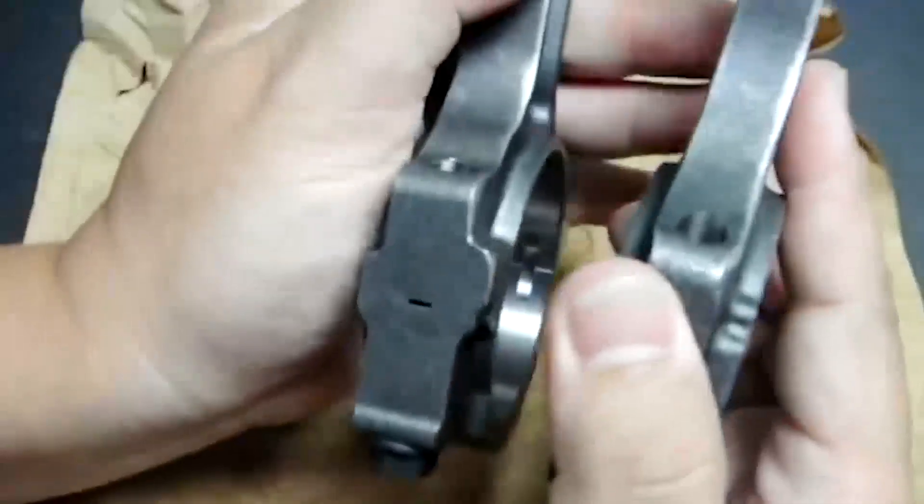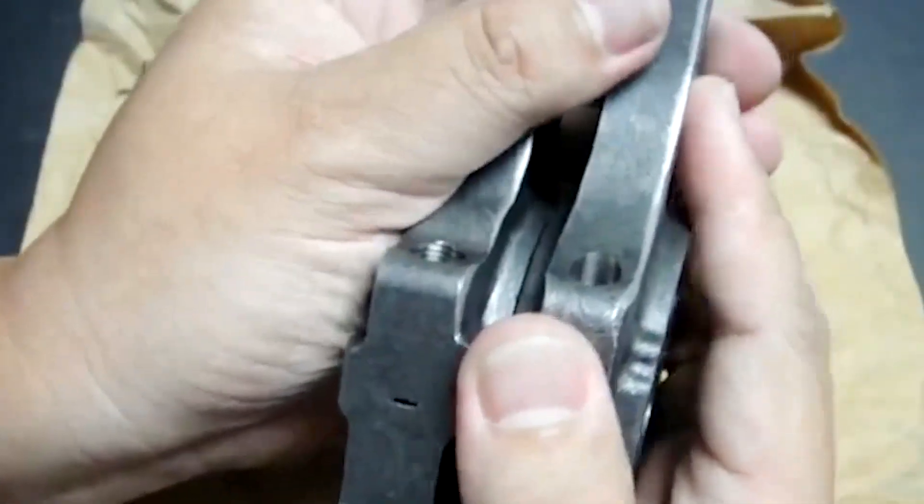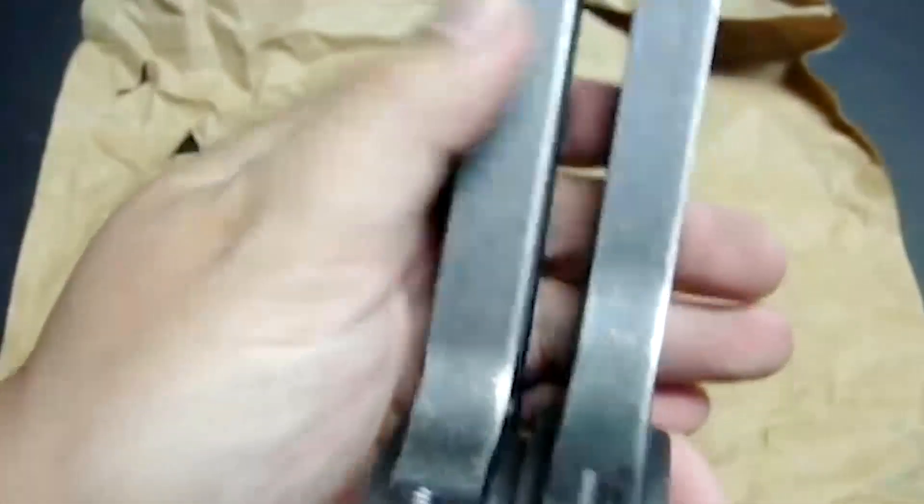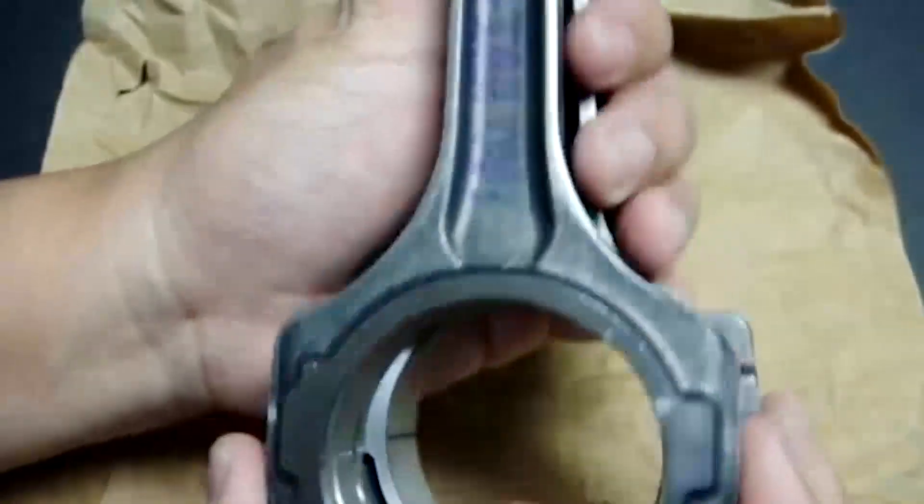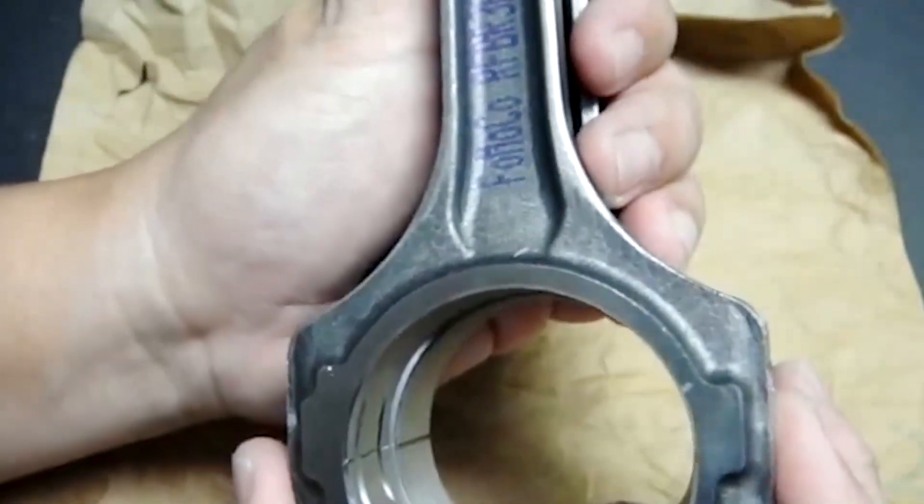For comparison, here is another center forged powdered metal connecting rod, but this powdered connecting rod is for a naturally aspirated engine.